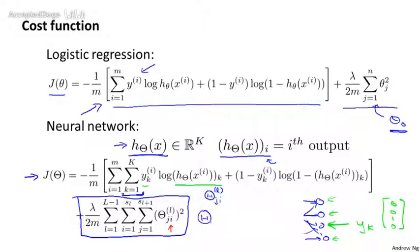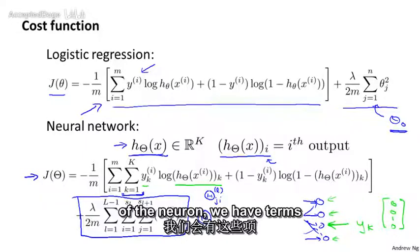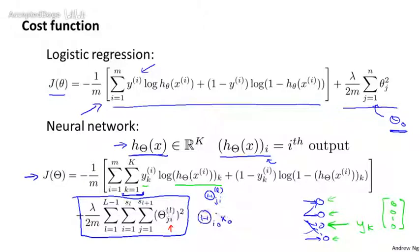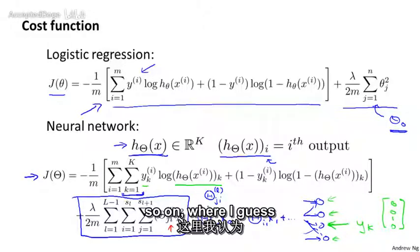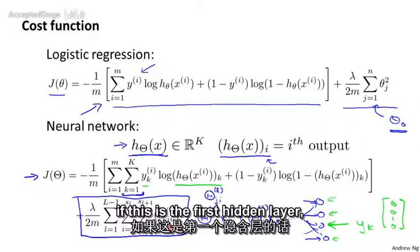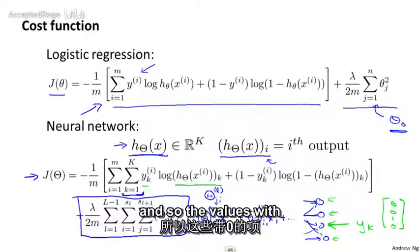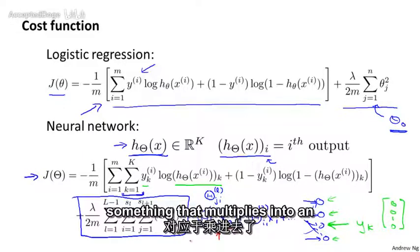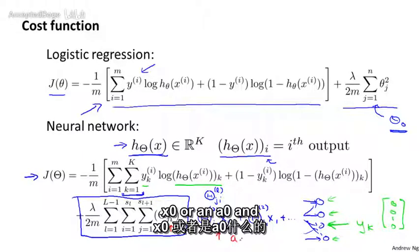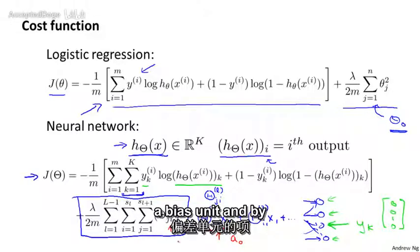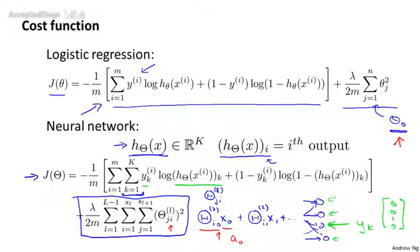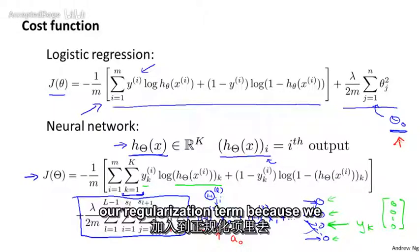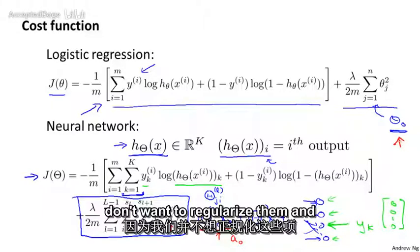So that is because when we're computing the activation of the neuron we have terms like these: θ_i0 plus θ_i1 x_1 plus and so on, where we can have a_2 there. And so the values of θ_i0, that corresponds to something that multiplies into an x_0 or an a_0. And so this is kind of like a bias unit and by analogy to what we were doing for logistic regression, we won't sum over those terms in our regularization terms because we don't want to regularize them and shrink their values to zero.